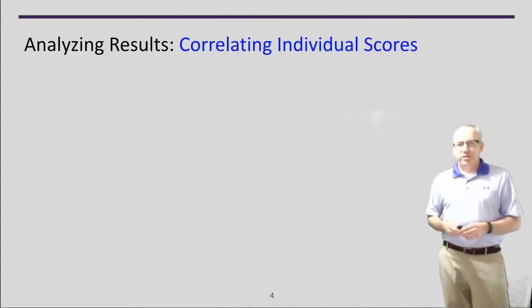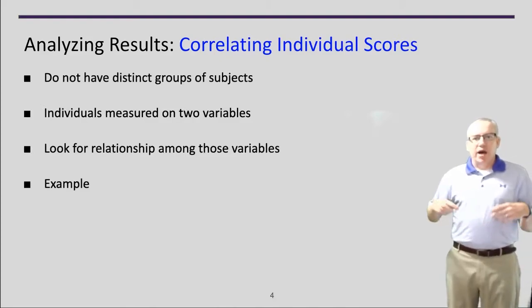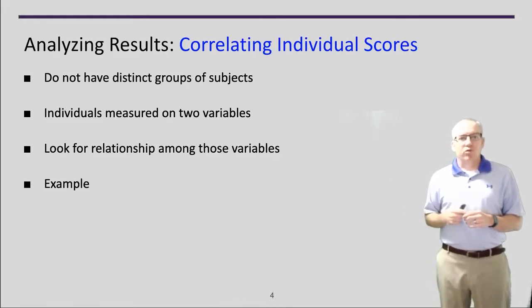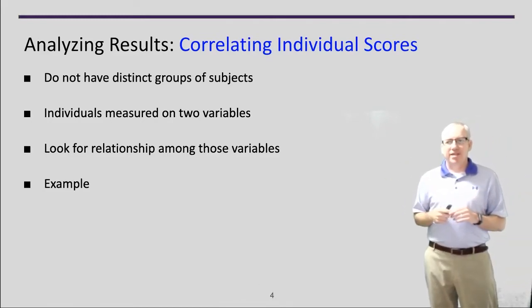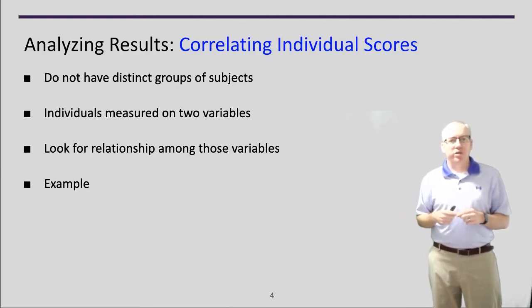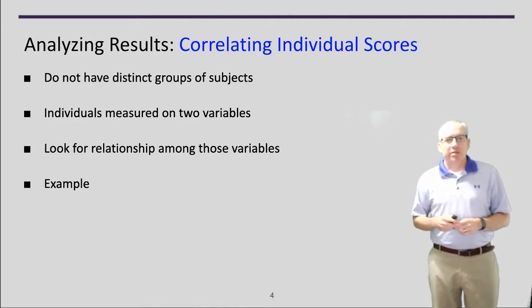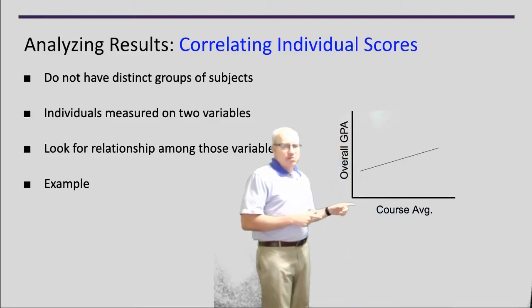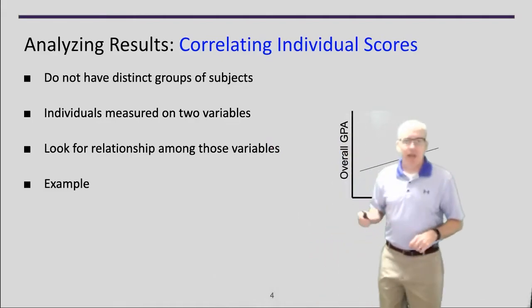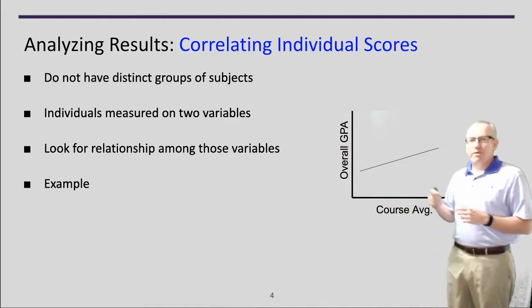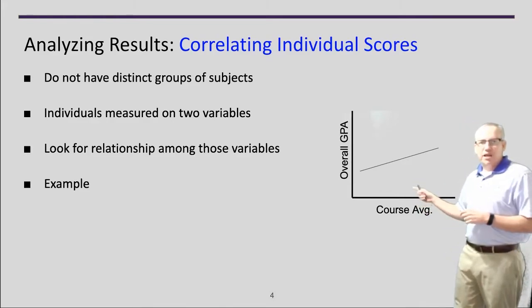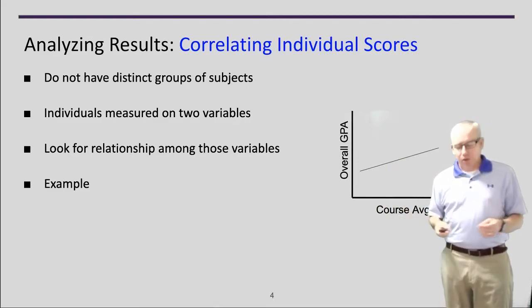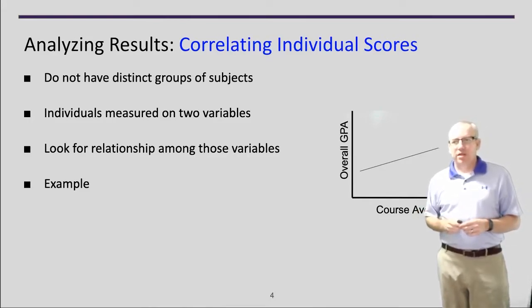Another kind of analysis we might want to do is correlation of individual scores. This is when we don't have distinct groups — we just have one group of subjects. The individuals in that group may be measured on multiple variables, say two, and we're looking for a relationship between those two variables. For example, suppose we want to know if there's any relationship between a student's course average and their overall GPA. We can plot these and see if there's a relationship.